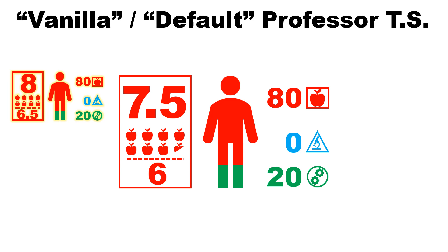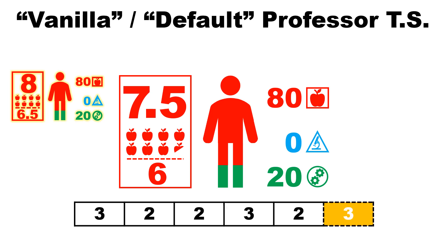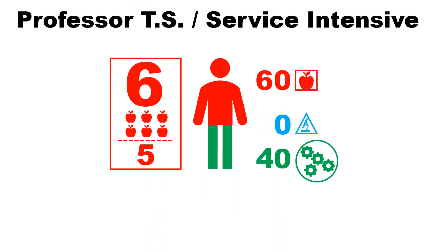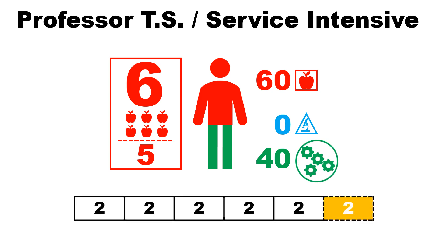Let's consider an example teaching load over 6 terms. They have a load of 3-2-2 in the first year, and then 3-2 in the second year, followed by a non-teaching term with a credit of 3. The arithmetic all works out: an actual load of 7.5 and an effective load of 6. The second core type of professor teaching stream would be the service-intensive position. With the teaching load of 6, five terms with a load of 2, and then a credit for 2 for the sixth term.